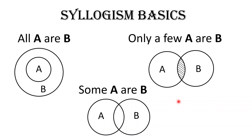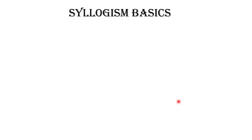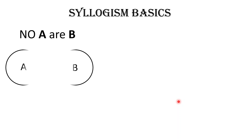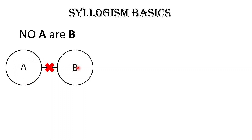Now let's look at the next basic: No A are B. This is denoted with A and B as completely separate circles, meaning there is no element common between A and B — no element of A and B are shared.